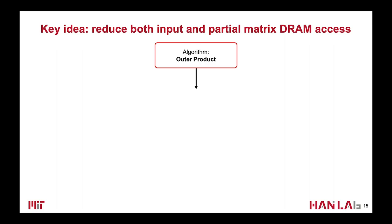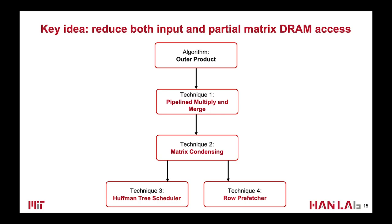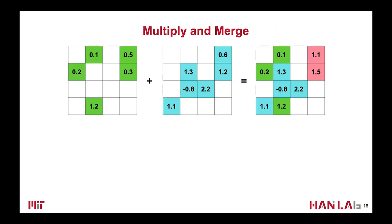Therefore, our main idea is to reduce both input and partial matrix DRAM accesses. To do this, we propose pipeline multiply-and-merge, matrix condensing, and a Huffman tree scheduler to reduce partial matrix DRAM accesses. We also propose row prefetch to reduce input matrix DRAM accesses. We will introduce them in detail soon.